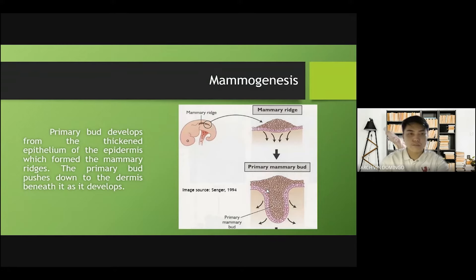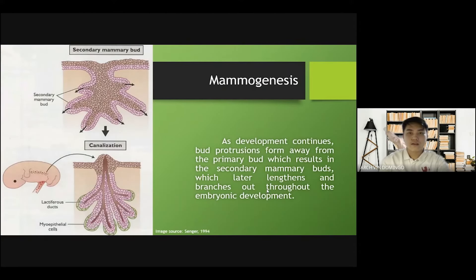As the development continues, bud protrusions form away from the primary bud, which results in secondary mammary buds, which later lengthen and branch out throughout embryonic development.